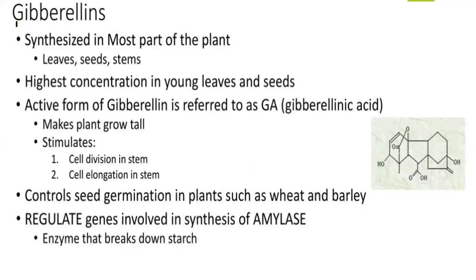The last of the plant regulators we'll discuss is gibberellin. Gibberellin is synthesized in most parts of the plant — leaves, seeds, and stems — with the highest concentration in young leaves and seeds. Its two important roles are stem elongation and seed germination. The active form is referred to as gibberellic acid (GA). Its main function is to make a plant grow tall by stimulating cell division and elongation in the stem, and it also regulates genes involved in the synthesis of amylase.